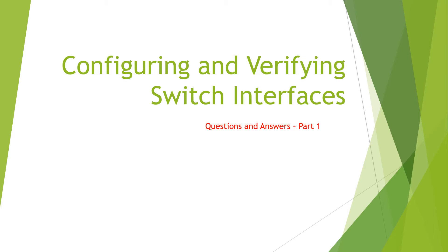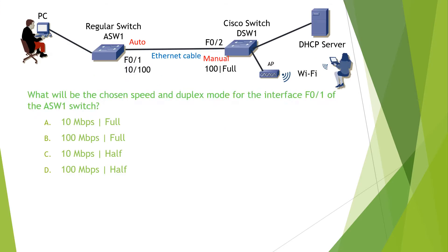In this video, we talk about configuring and verifying switch interfaces. The question reads: what will be the chosen speed and duplex mode for the interface F01 of the ASW1 switch? In order to answer this question, we notice that the interface F01 has its settings set to auto. So we need to pay attention to the interface that connects to it — in this case, it is F02 on the switch DSW1. We see that interface F02 has the manual setting for speed of 100 Mbps and full duplex mode.